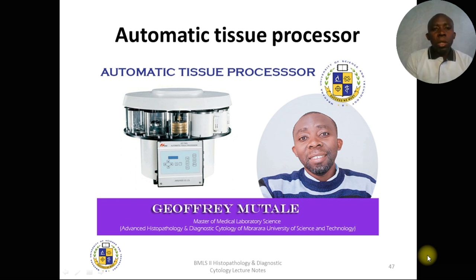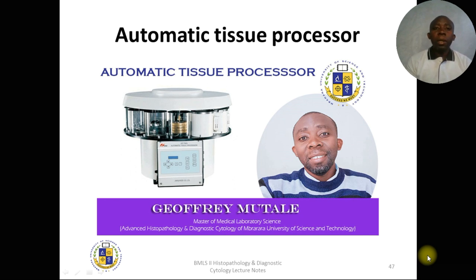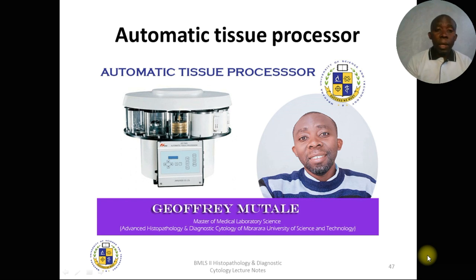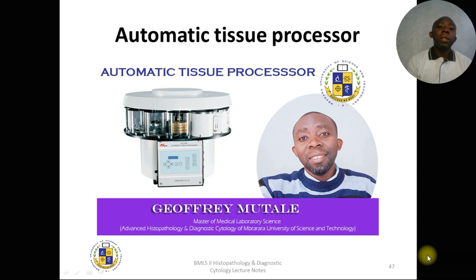Before the advent of technology, tissue processing was done manually. However, the chemicals used — such as xylene — are corrosive and some are carcinogenic. Human error was also a challenge, for example forgetting to change the tissue from one liquid to another. With automation, work is simplified, turnaround time is shortened, and these automatic tissue processors continue to evolve as technology advances.